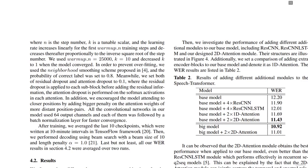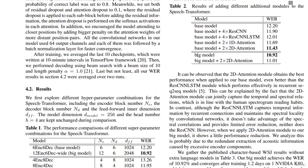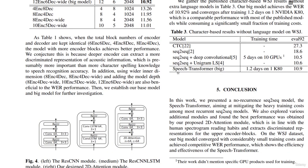Here we have the experimental setups and results. We have the base model made of six encoders and six decoders with a model size of 1024, which produces a word error rate of 12.2. Once we increase the number of encoders to 12 with six decoders, we have the smallest error rate of 10.92 — so the big model has the lowest word error rate. Comparatively, the big model also has the smallest word error rate while only taking 1.2 days on one GPU to converge, whereas other models took five days on 10 GPUs.